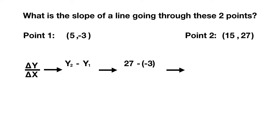27 minus negative 3 is 30. Now we can use a similar process to find our change in x. We will take x2, or the x coordinate of point 2, and subtract x1, or the x coordinate of point 1.